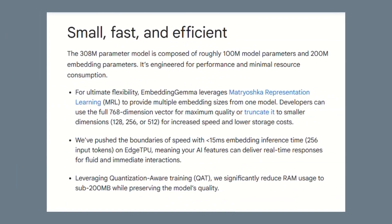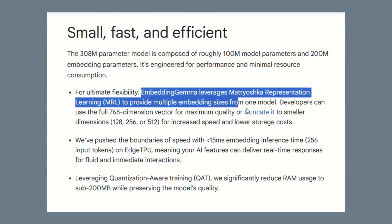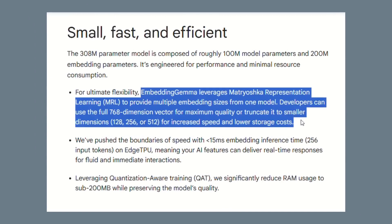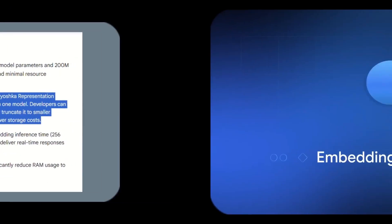Here's the secret most people are missing: Embedding Gemma supports Matryoshka representation learning. You can adjust the quality — need super high quality, use 768 dimensions; need speed over quality, use 128 dimensions. It's like having multiple models in one.